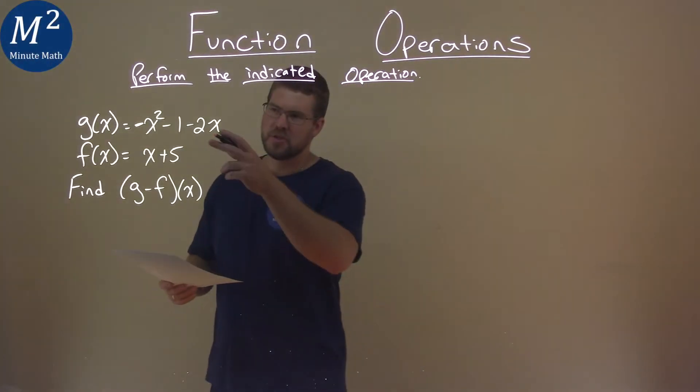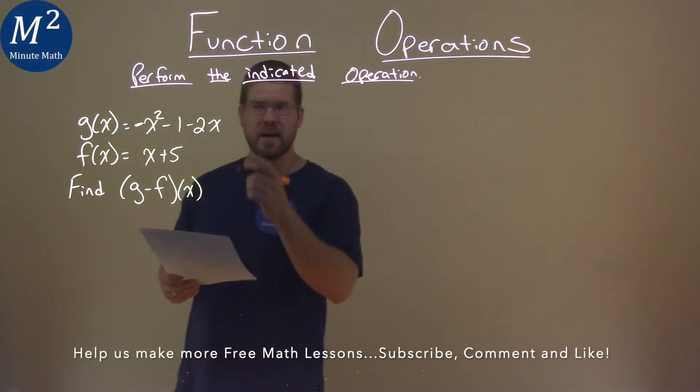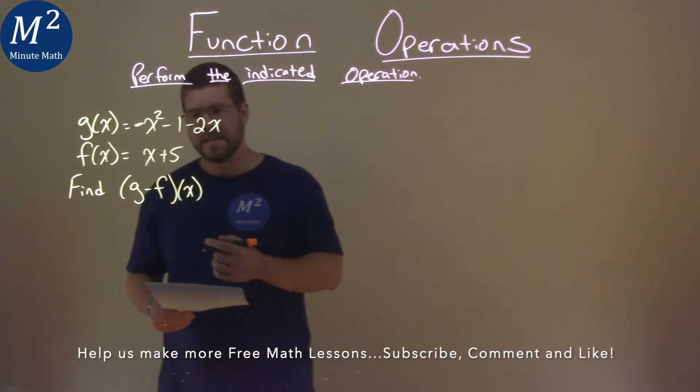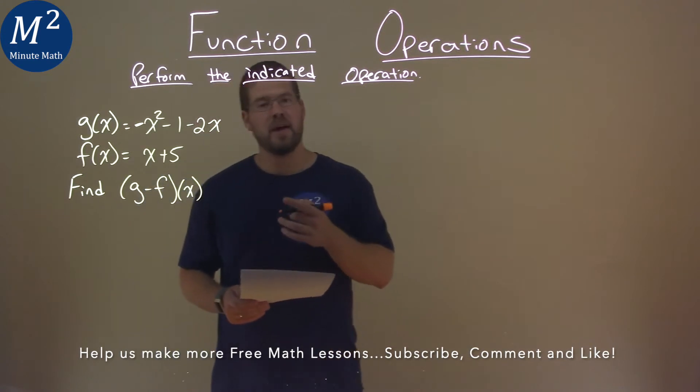We're given this problem right here. g of x is equal to negative x squared minus 1 minus 2x. f of x is equal to x plus 5, and we need to find g minus f of x.